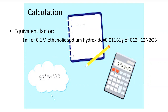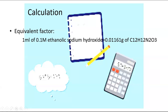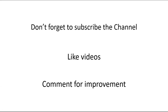The molecular formula of Phenobarbitone is C12H12N2O3. The percentage purity of Phenobarbitone is then calculated from the titration results. That is all about the assay — don't forget to subscribe to the channel, like the videos, and comment what you need. Thank you all.